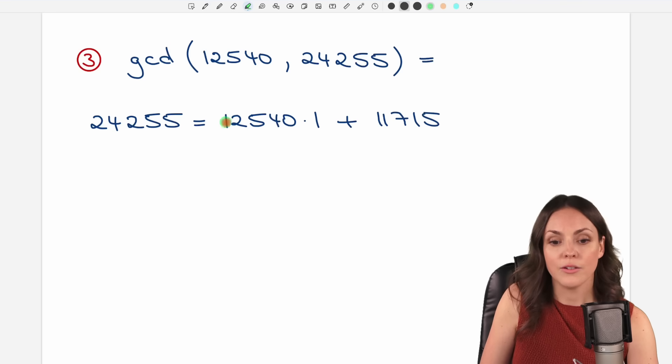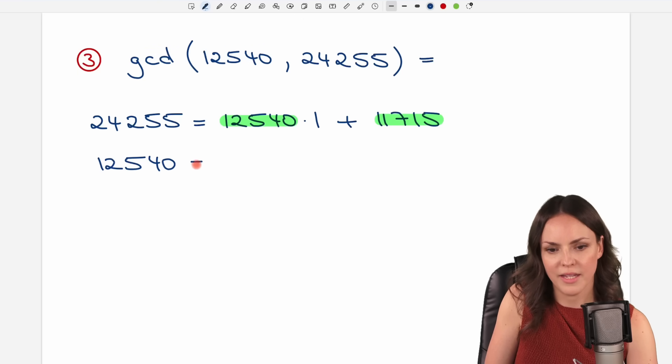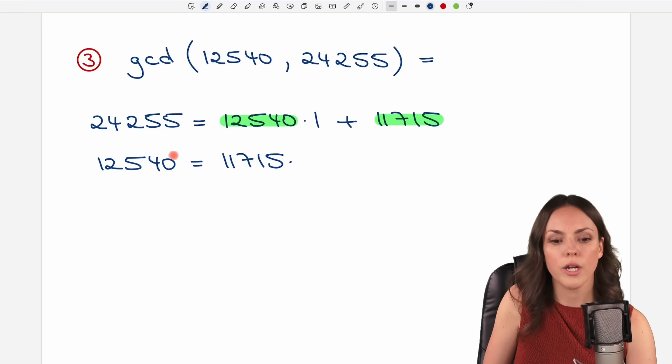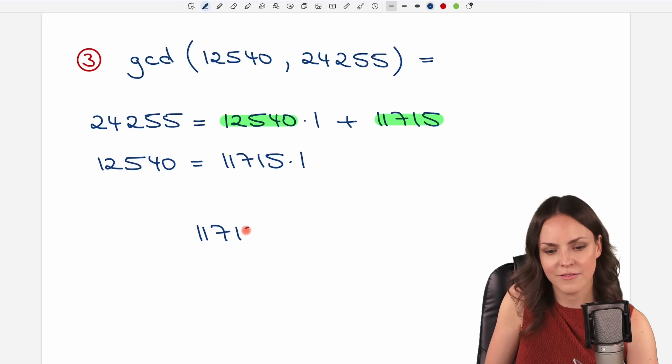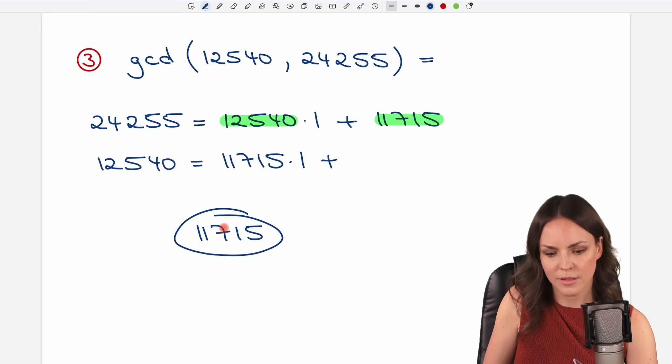But now we have new numbers, smaller numbers. They're still big, but okay, we repeat our steps. So we have the 12,540. And how often does this number now, the 11,715, go into this number? It is just one time, because one times that number is 11,715. And from here to here, we have the remainder. So how many steps are these? If you subtract these two numbers, you get a result of 825.